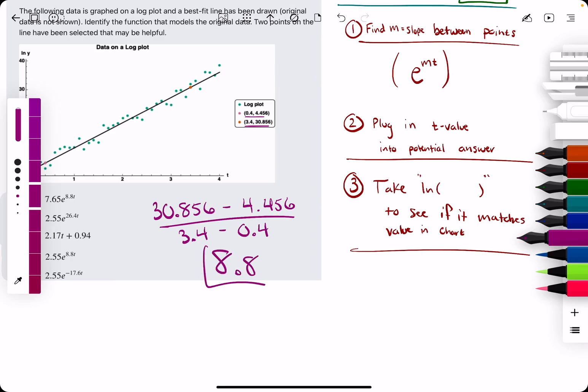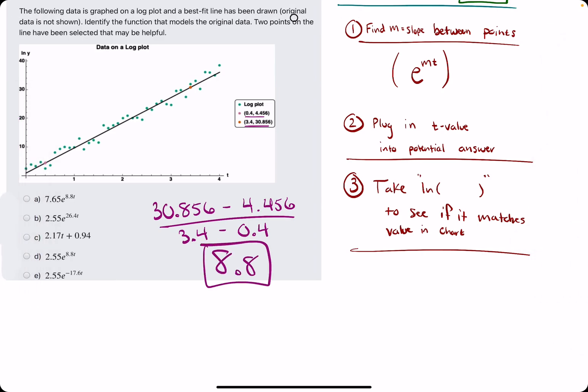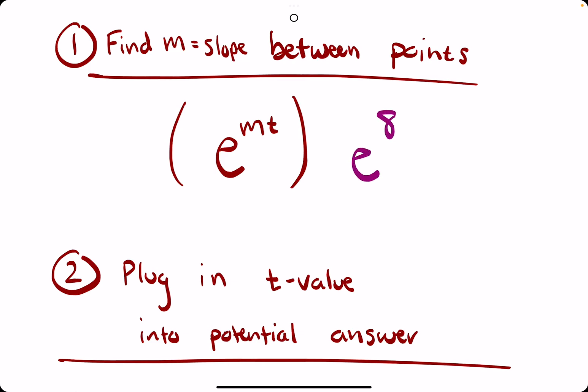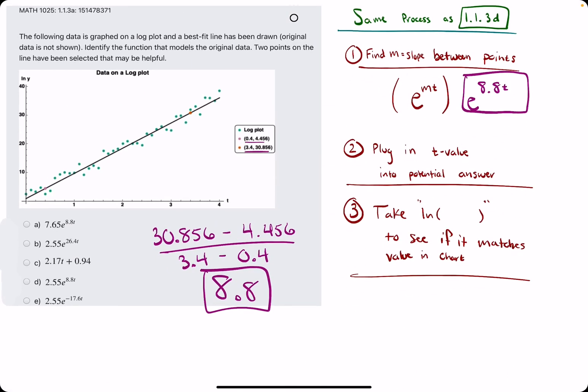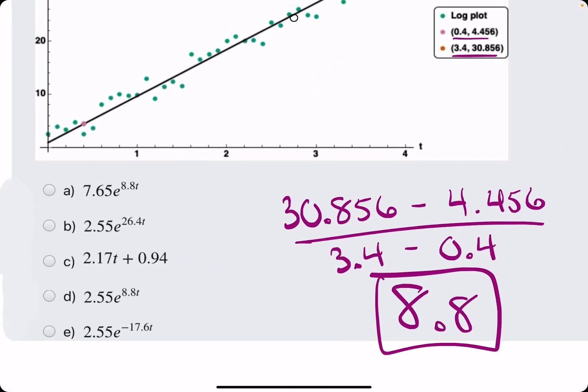So where does this come into play? 8.8 should be the exponent value. So we should see the term e to the 8.8t in our answer. So we can eliminate any options that don't have e to the 8.8t, so it narrows it down to either a or d.